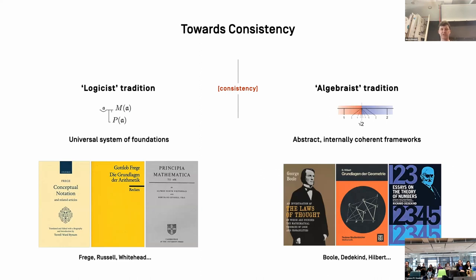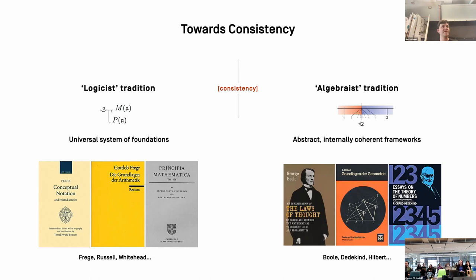On the other side we have the approach of Boole, Dedekind, and Hilbert — what I call an algebraic approach. They thought of abstraction as an instrument to create internally coherent frameworks without a unified basis. They would start from an arbitrary set of postulates and not care whether this forms some uniform tree covering the whole world, as long as it covers the theory they are working towards — an instrument to play with, not something that must be truthful to our world.